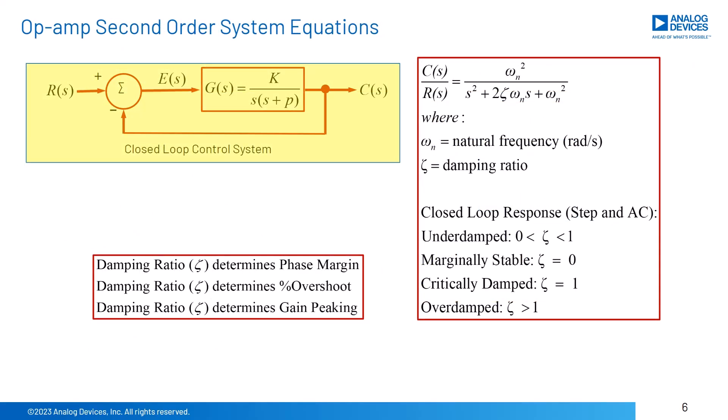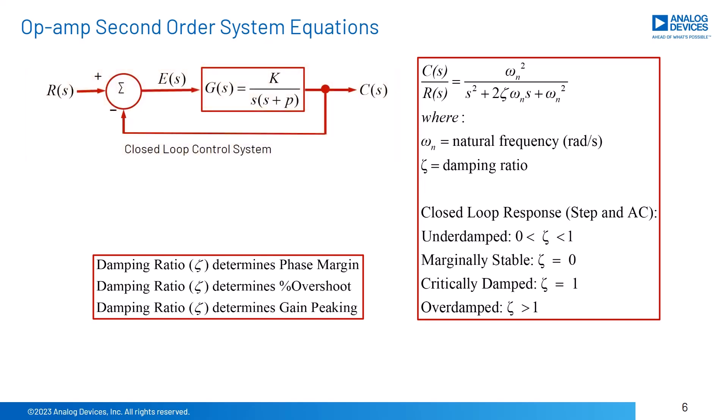A second-order closed-loop control system is shown here. There are well-known closed-loop behaviors of a dominant two-pole or second-order system. The loop gain phase can be determined by closed-loop testing in the time domain using percent overshoot for a step input, or by closed-loop testing in the frequency domain using AC gain peaking. The damping ratio connects both tests to loop gain phase margin. Many op-amp circuits are dominated by two poles in the loop gain, and these closed-loop tests are easier to use in the real world in lieu of open-loop testing needed for loop gain plots.